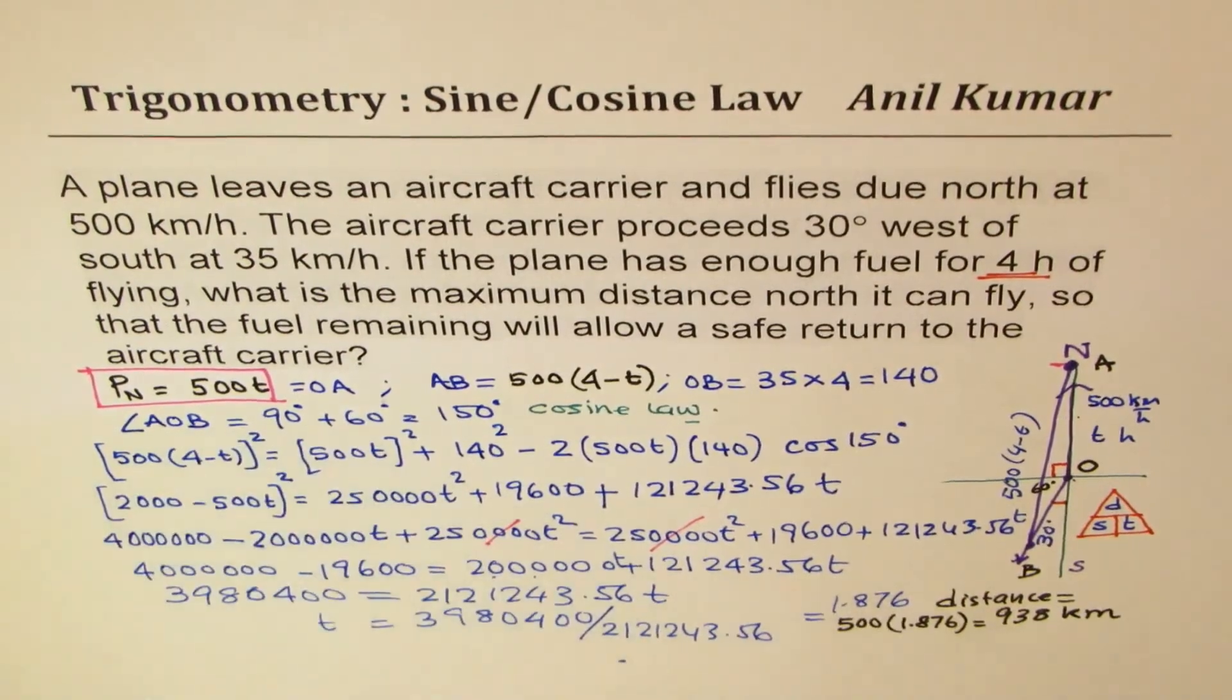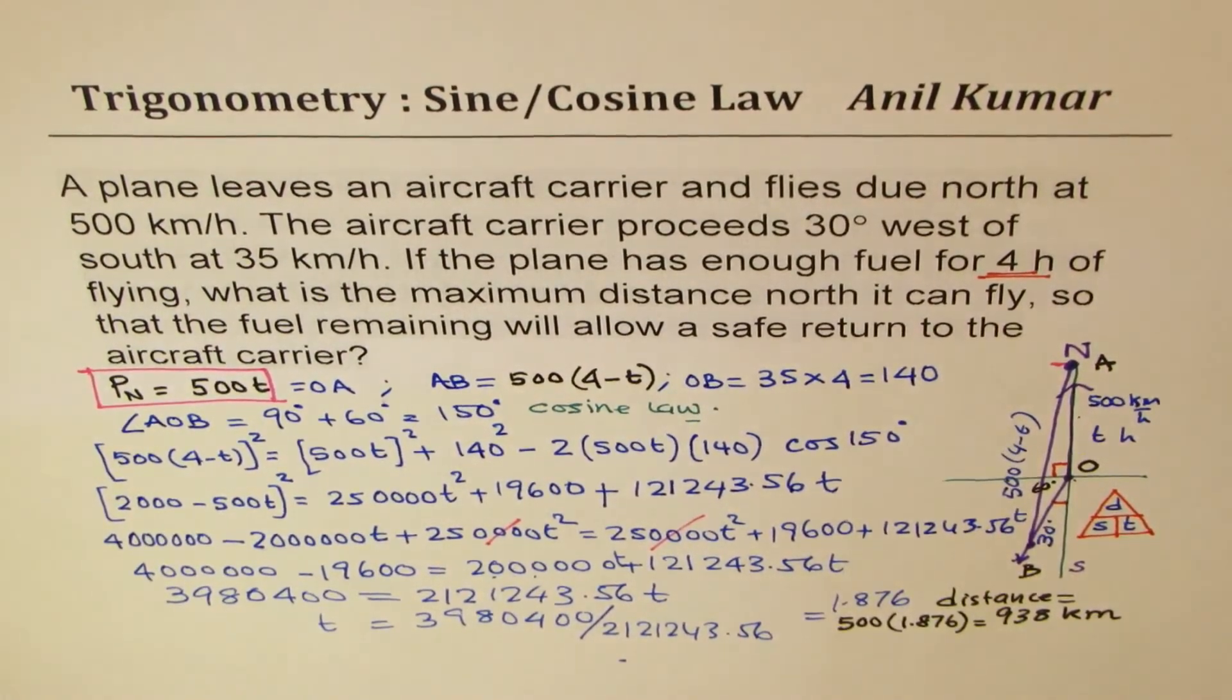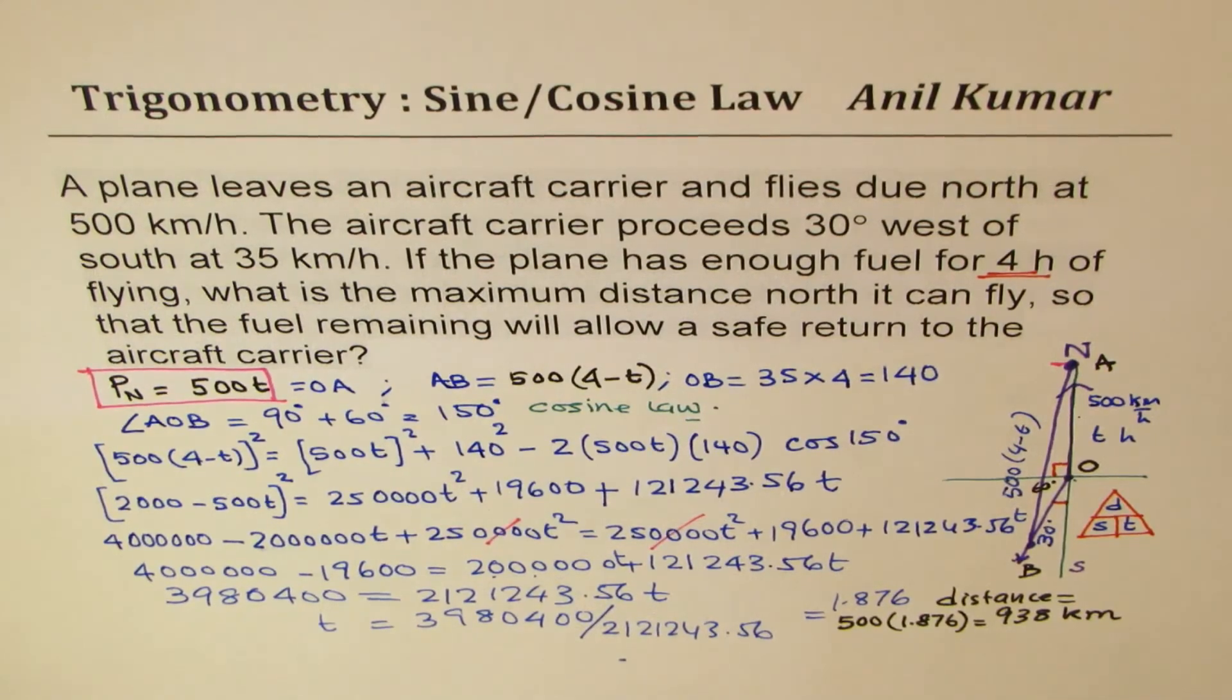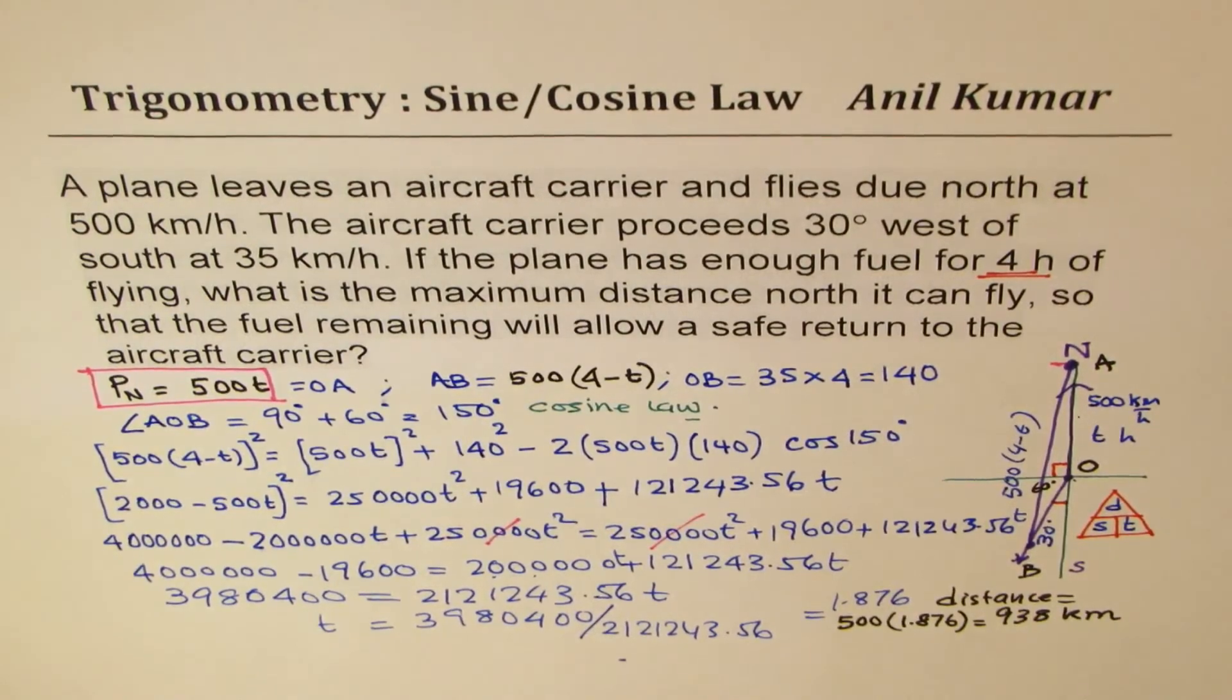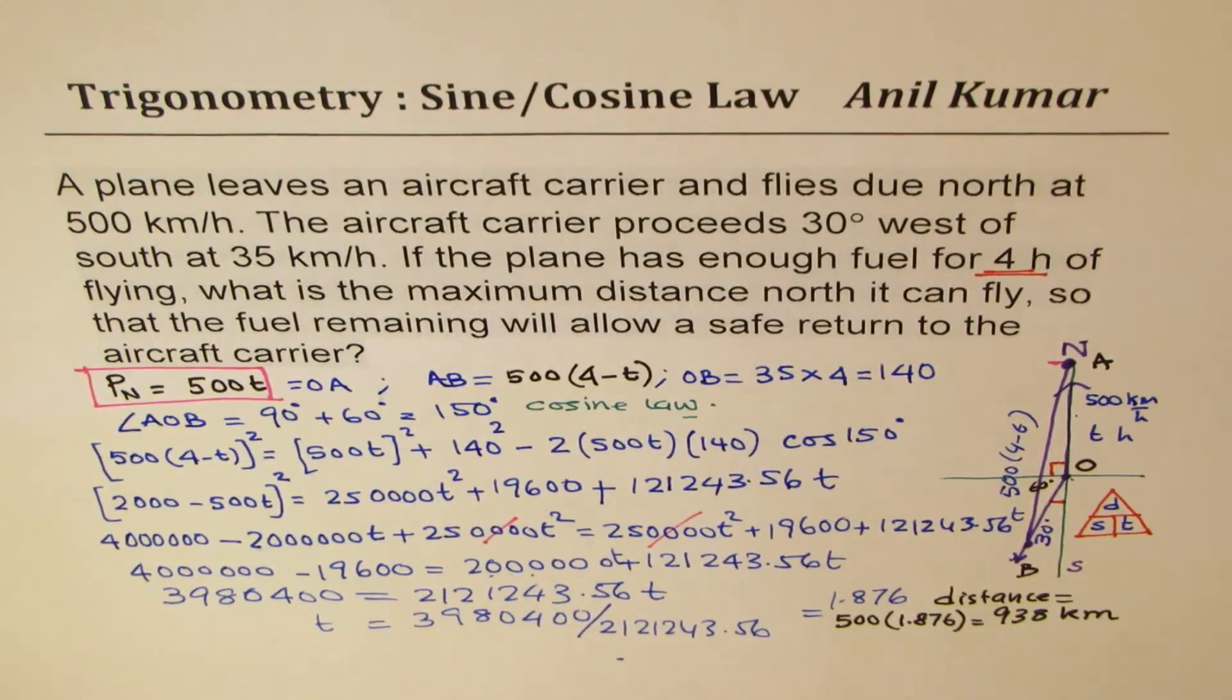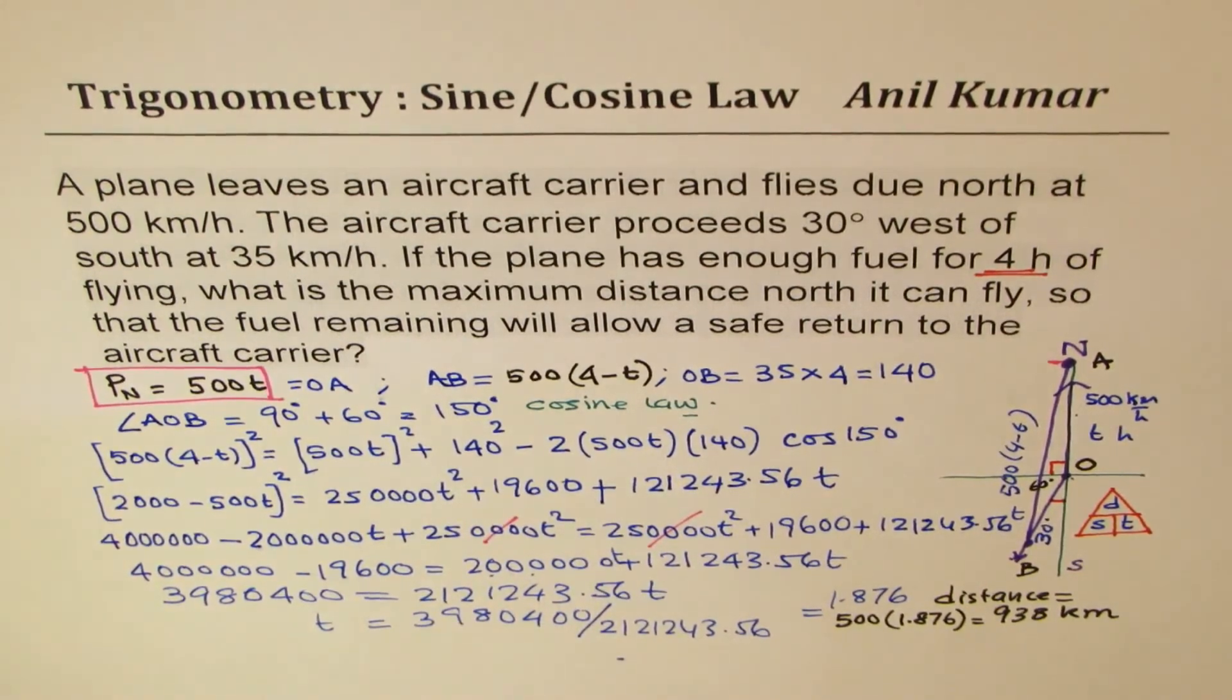Does it make sense to you? So that is the distance, maximum distance, the plane can fly safely north, rounded to whole numbers. So it is an application of cosine law. It requires a lot of calculations, although the concept is simple. So I hope that helps you to understand how to solve such questions.